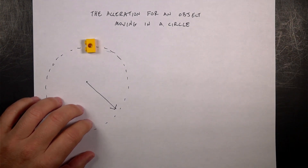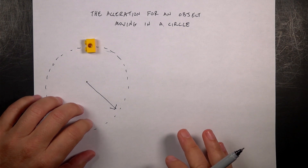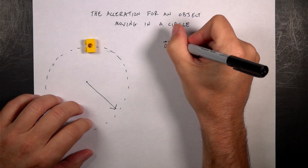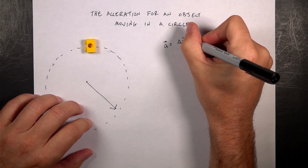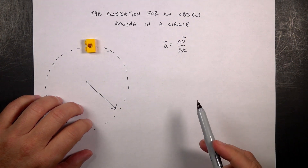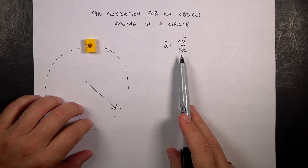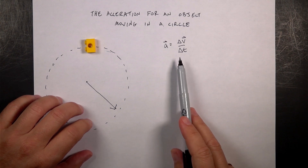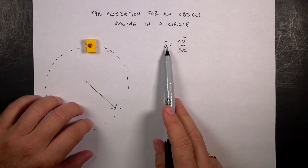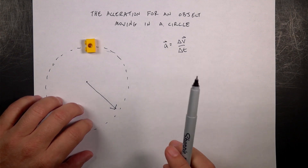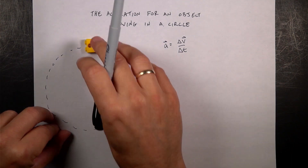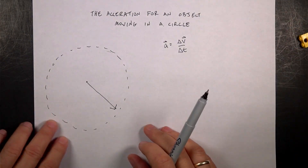Let's jump back for a second and ask: what's the definition of acceleration? A is defined as the change in velocity divided by the change in time. This is the definition we normally use in algebraic physics — you could take the limit as this gets really small. We mostly dealt with constant acceleration, but this is not constant acceleration. So let's pick some values and look at the acceleration of an object moving around in a circle, and then we'll make it more complicated.